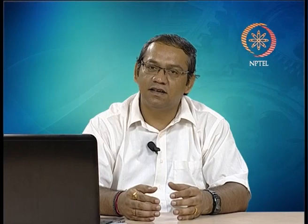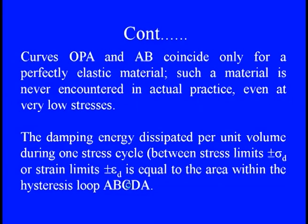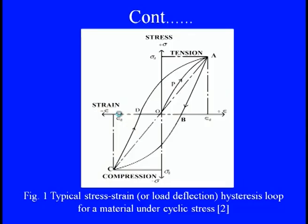They will certainly make even a small hysteresis loop, where there is a clear loss of energy. The damping energy which is being dissipated per unit volume during each cycle is simply, if we are saying it is the stress limit ±σ_d and the strain limit ±ε_d, it is absolutely equal to the area - whatever the damping energy dissipated per unit volume during this cycle is nothing but showing the area of the stress-strain diagram within the hysteresis loop of a-b-c-d-a. When we are just trying to see these things, we have a clear loop of hysteresis under the stress-strain diagram.